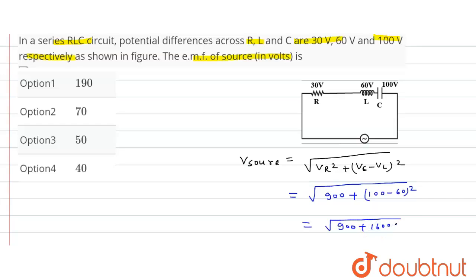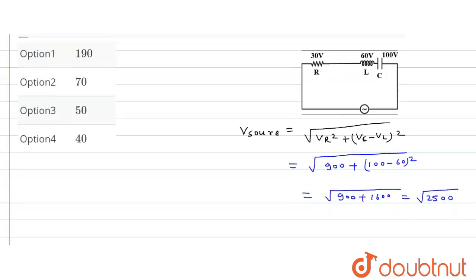Okay, so this is equal to how much? 2500. Okay, so V source is equal to how much? 50 volt.